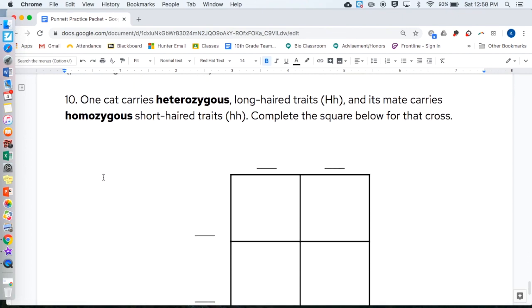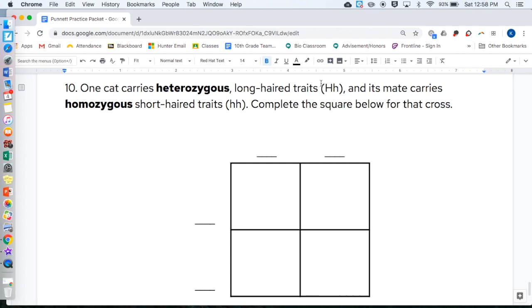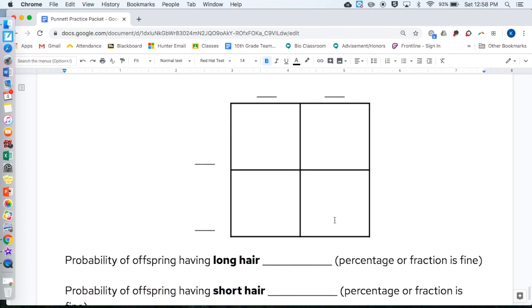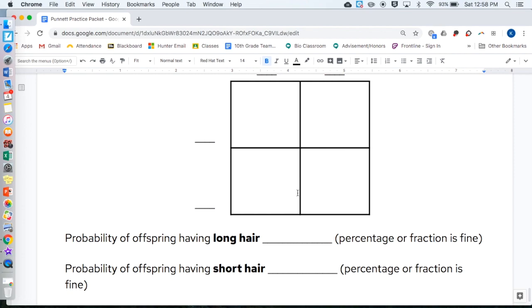Ten. One cat carries heterozygous long-haired, capital H, lowercase h, and its mate carries homozygous short-haired traits, lowercase h, lowercase h. Complete the square below for that cross. Then, use that square to find the probability of having long hair and the probability of having short hair.